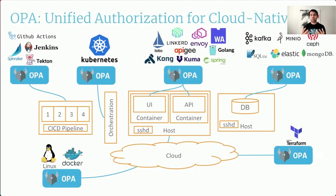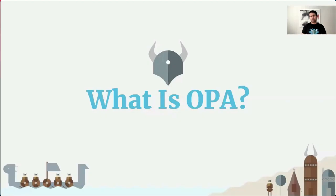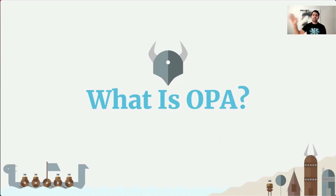This was one of the motivations behind creating the Open Policy Agent. OPA is an open-source, general-purpose policy engine. When you use OPA, you are decoupling the policy enforcement from the policy decision-making, so your services can now offload policy decisions to OPA by executing a query.